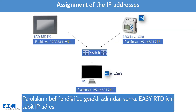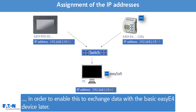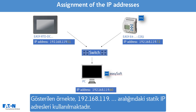After this necessary assignment of the passwords, we come to the assignment of the fixed IP address for the EZ-RTD, in order to enable it to exchange data with the basic EZ-E4 device later. In the example shown, fixed IP addresses in the range 192.168.119 are used for the devices.